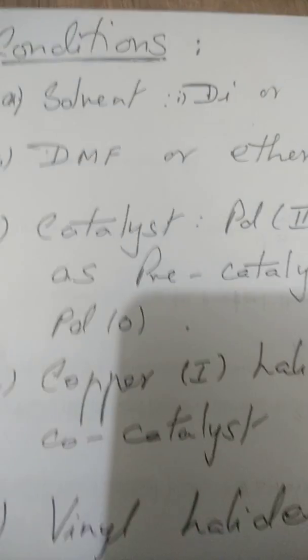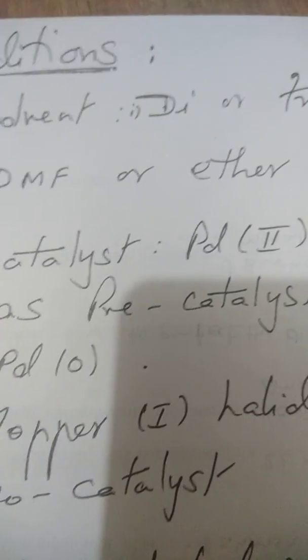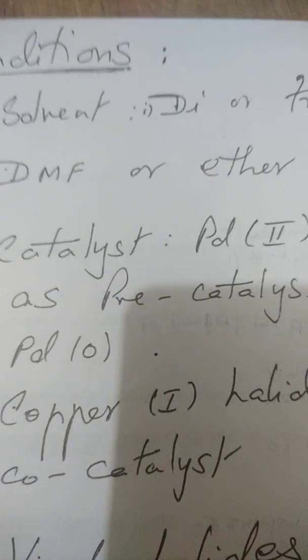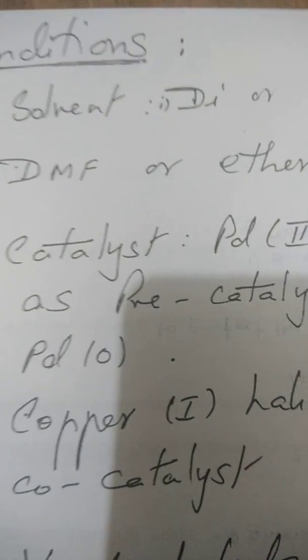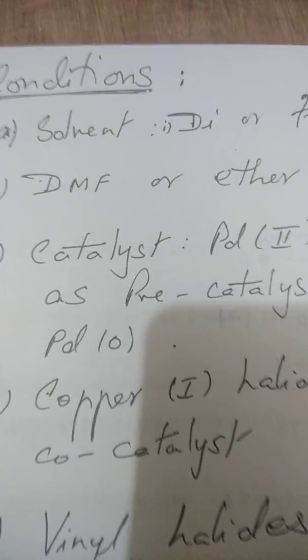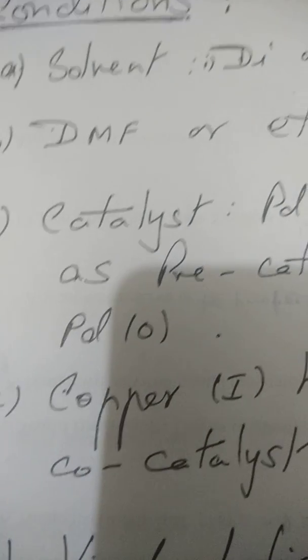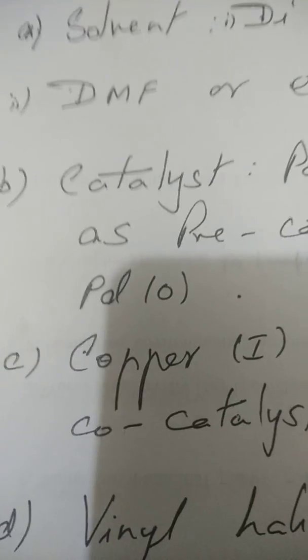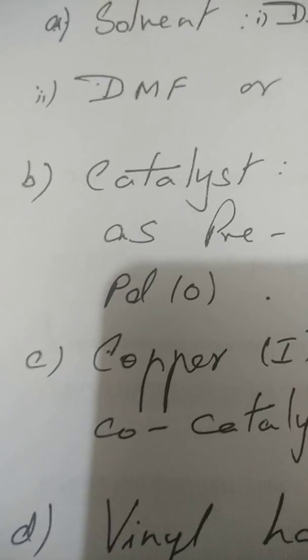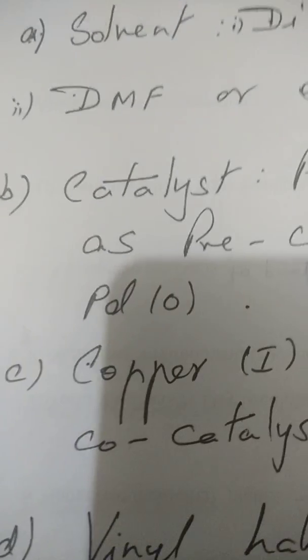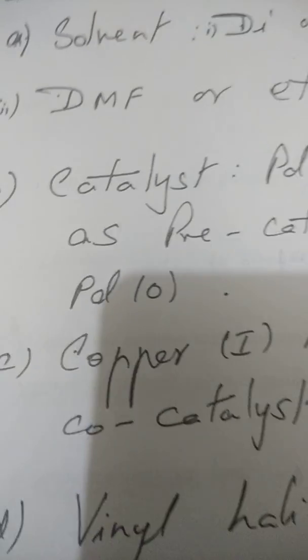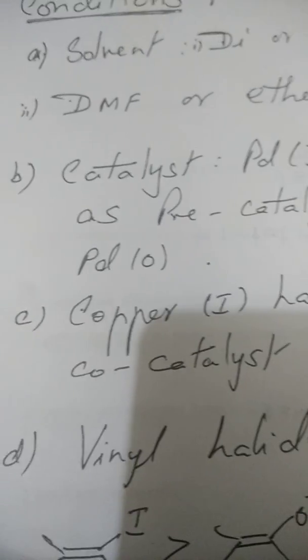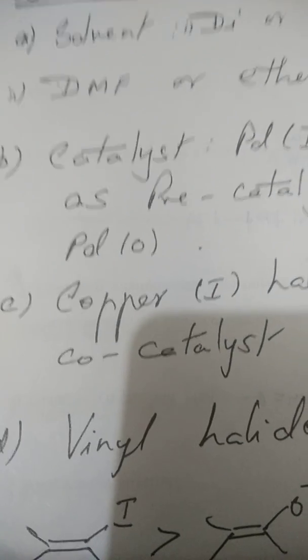The catalyst used is palladium(II) and this is a pre-catalyst because this is converted, from this we obtain palladium in the zero valent state in the presence of the base. Copper(I) is used as a co-catalyst, we'll soon see how.